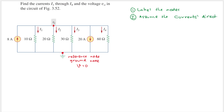We are already given that i1 is going down, i2 is going down, i3 is going down, and i4 is going down. For the current source branches, I just follow the arrow of the current source — this one is going down and this one is going up.